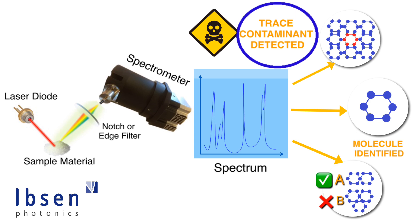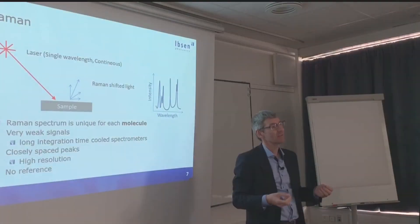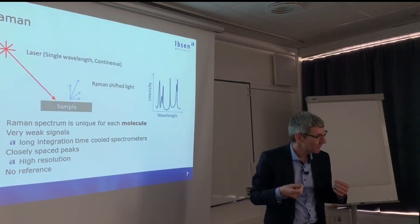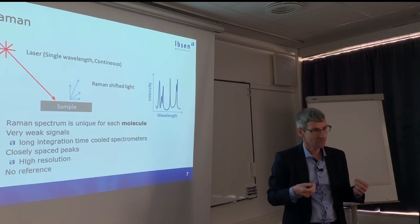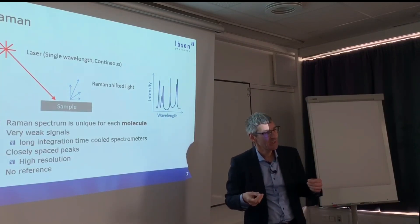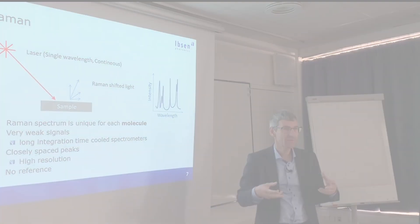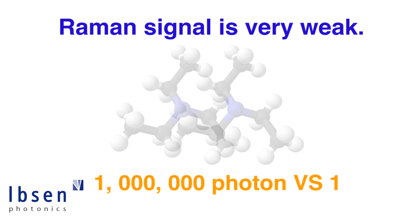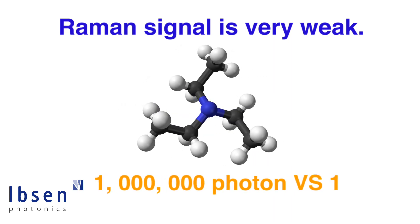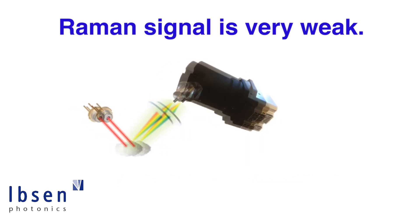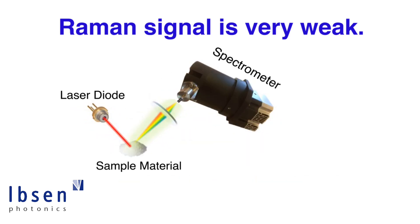Some of the characteristics of Raman is that it has really, really weak signals. The typical way people say it is that if you have one million photons from your Raman laser, then you get one photon out as your Raman signal. So that's not very high efficiency, so to speak.